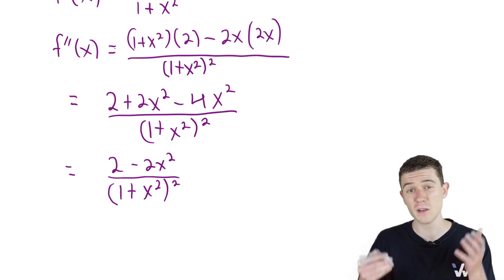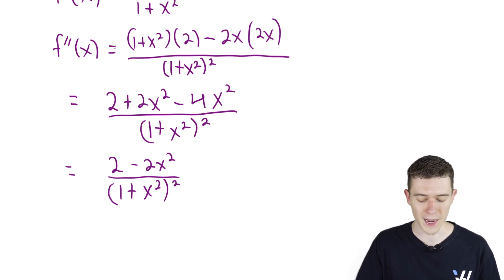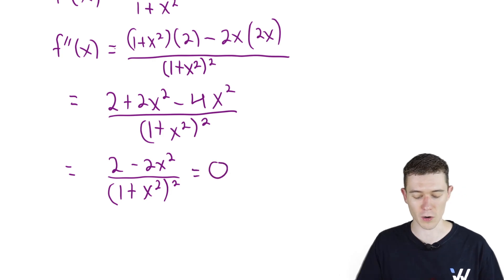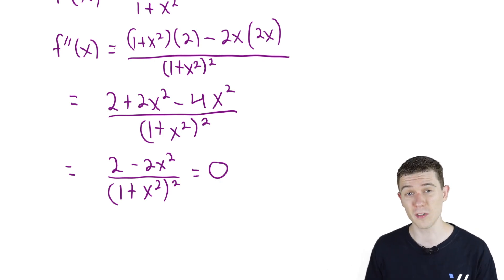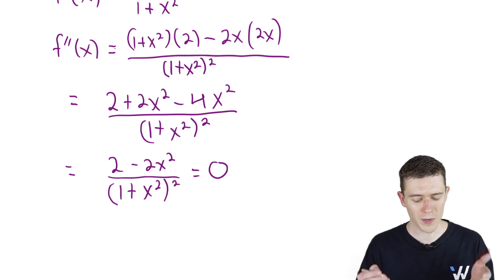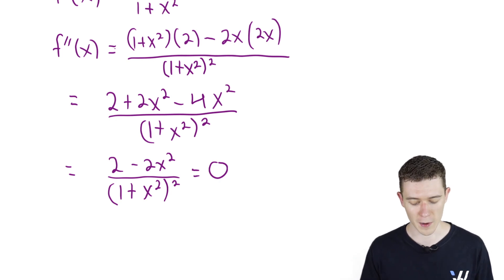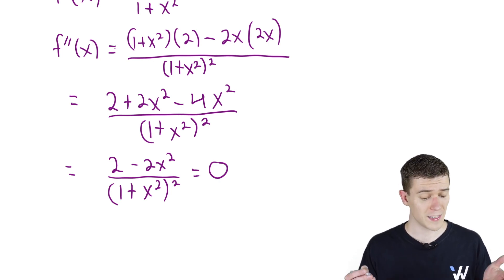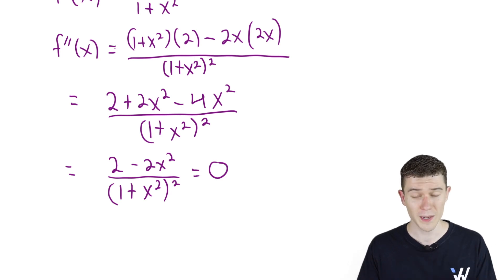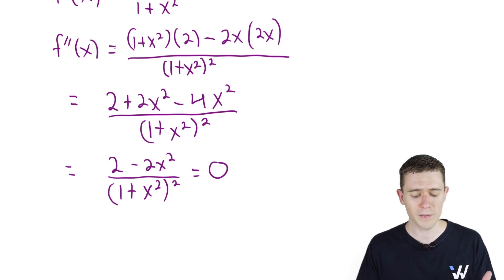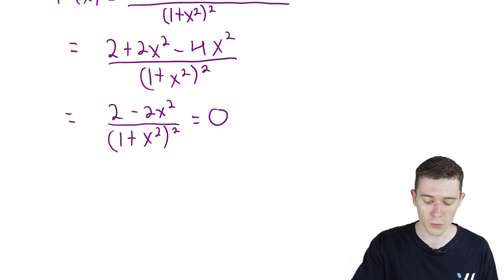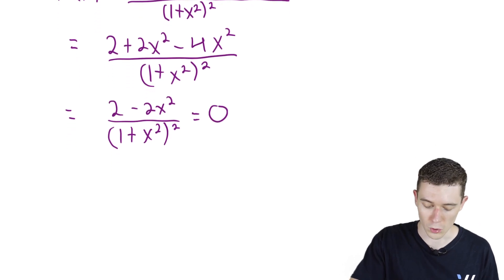To find any inflection points and the intervals of concavity, we take this second derivative and set it equal to 0. It's a very similar process to finding critical points and intervals of increasing and decreasing for first derivatives. We want to see where the numerator equals 0 and the denominator equals 0. The denominator is 1 plus x squared all squared — that's always positive, never going to be 0 over the real numbers, so we don't even have to bother checking the denominator.